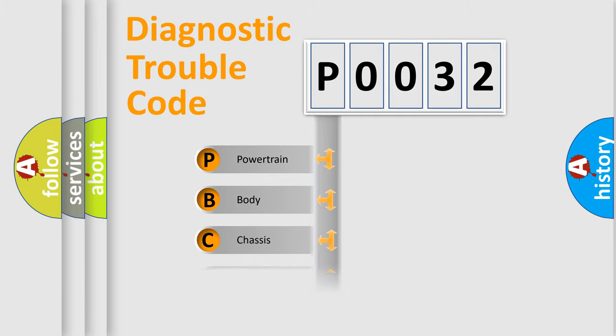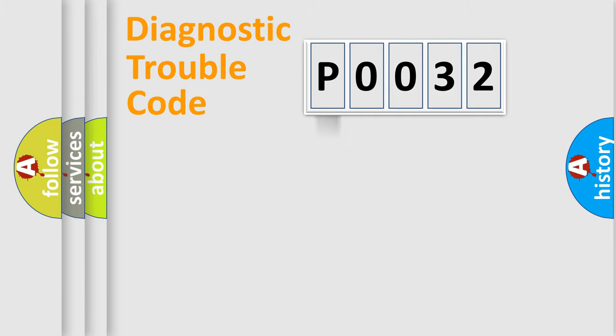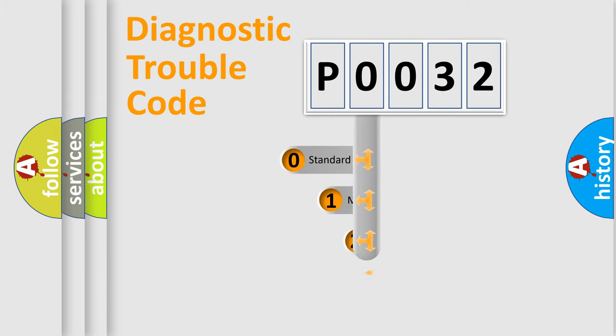The four basic units are: Powertrain, Body, Chassis, and Network. This distribution is defined in the first character of the code.